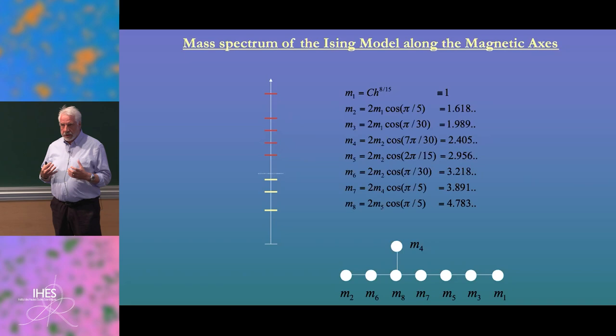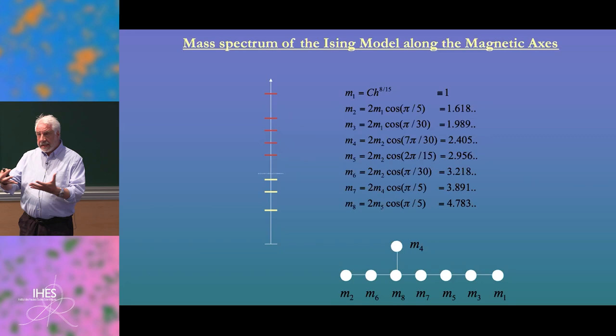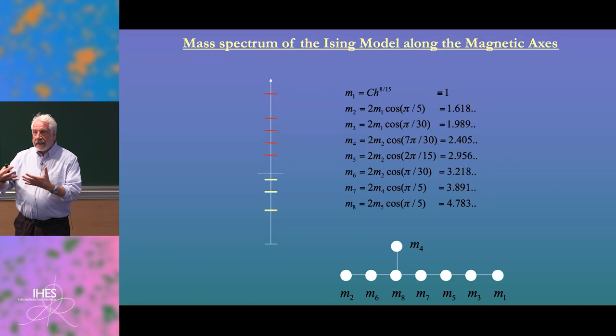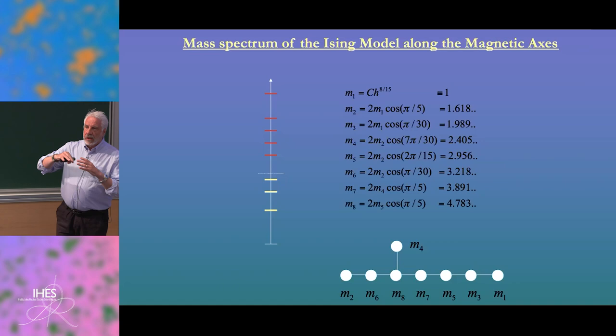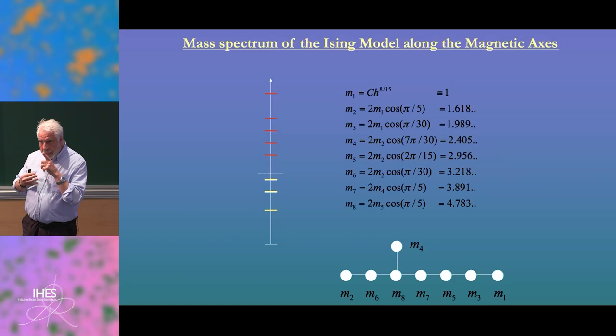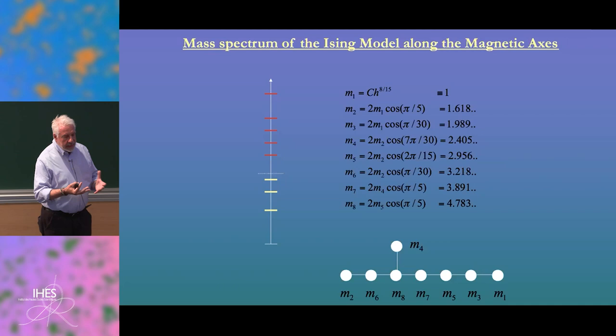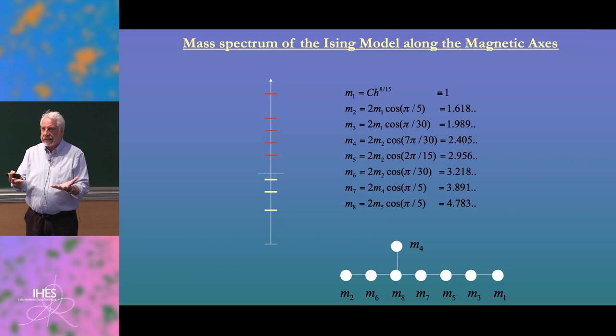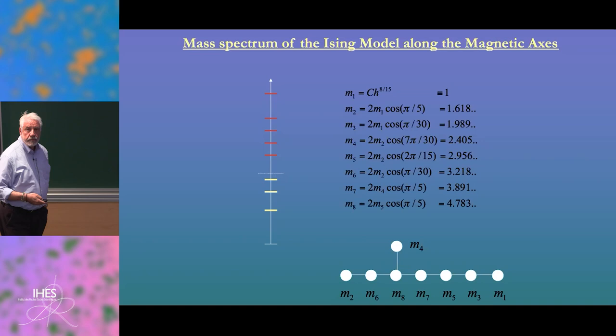The genius of Zamolodchikov was to understand that these quasi-particle excitations can scatter, and the relative scattering might create bound states. These bound states proliferate. Looking at all the amplitudes, at the end of the day, one can close what is called a bootstrap program with exactly eight particles. You have to imagine the Ising model near the fixed point perturbed by a magnetic field to be an ensemble of particles scattered elastically.